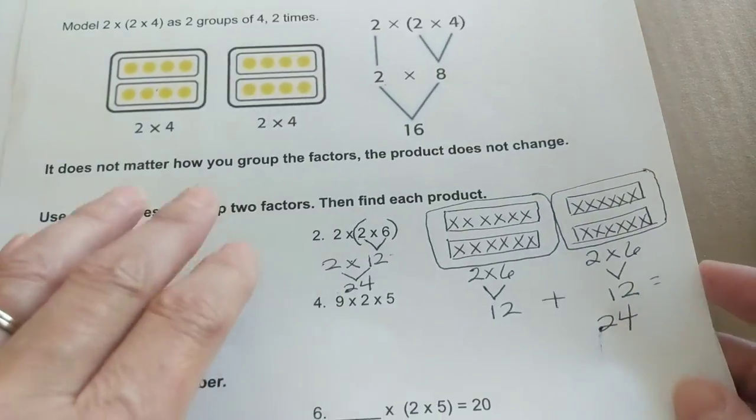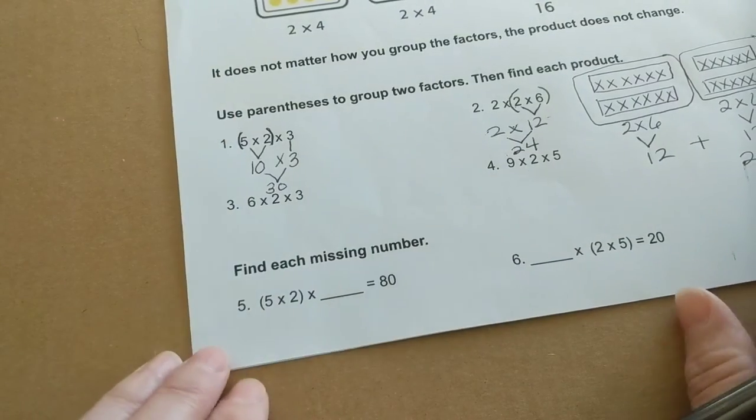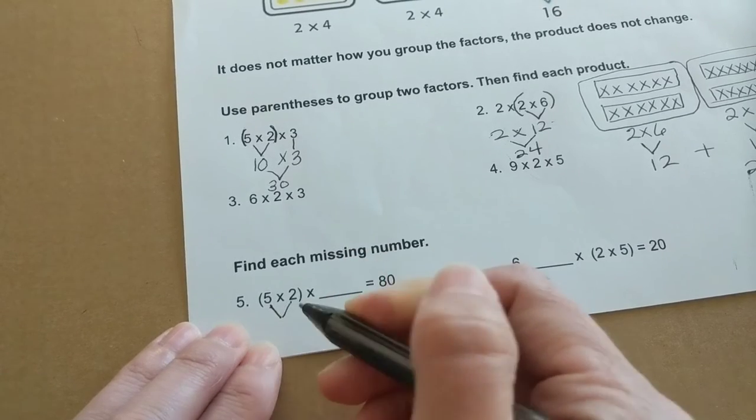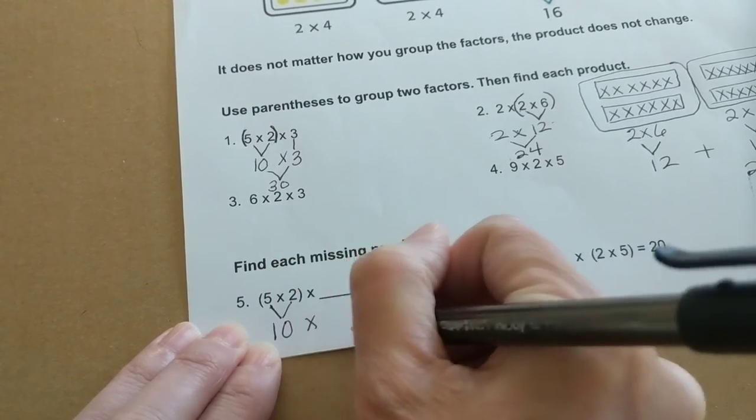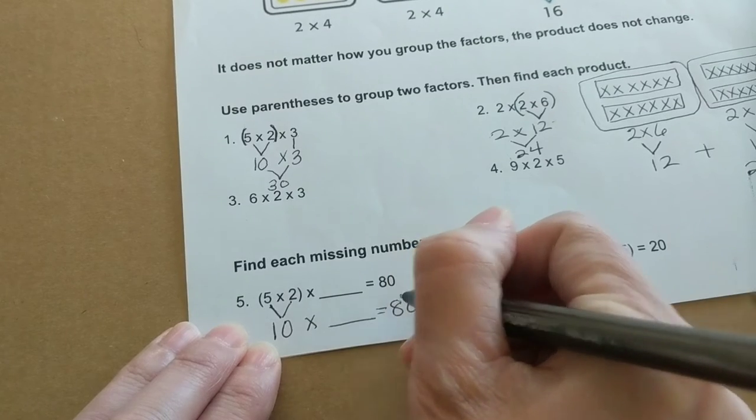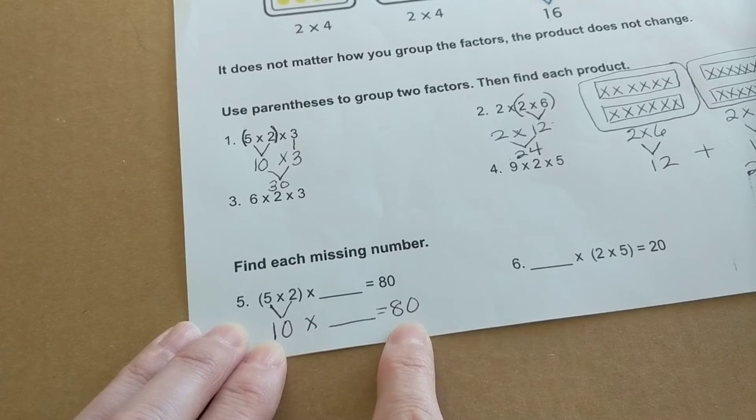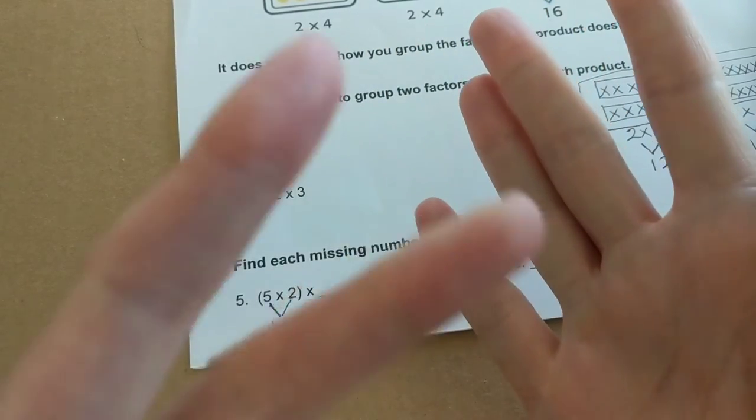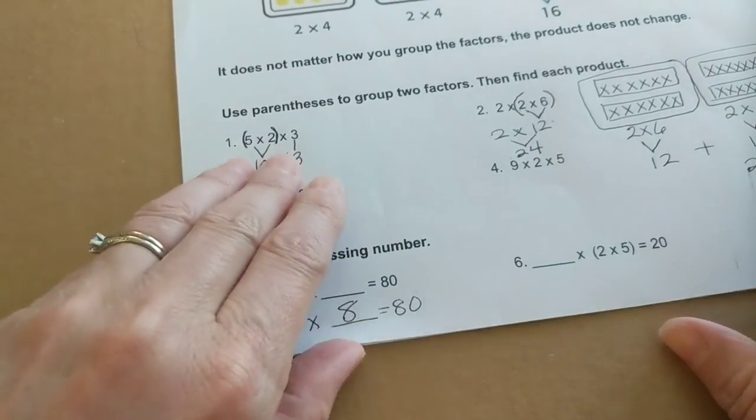So then moving on, I realize this problem down here is a little tricky. So I think I'm going to go over this one as well. Five times two times blank equals 80. So the first thing I'm going to do is decide what is five times two. I can count by five twice. Five, ten. Ten times blank equals 80. What number can I multiply by ten to get to 80? So I can count by tens until I get to 80. So let's practice. Ten, twenty, thirty, forty, fifty, sixty, seventy, eighty. I can count by ten eight times to get to 80. So that's all you have to do on these bottom problems.